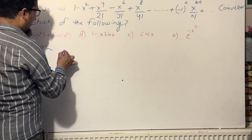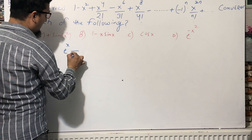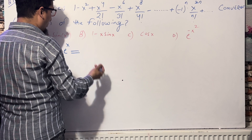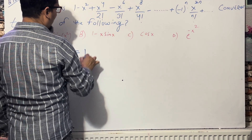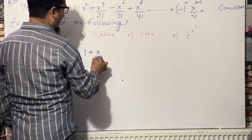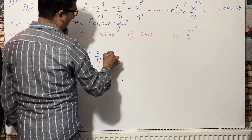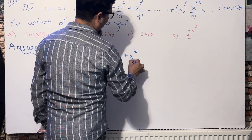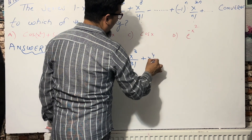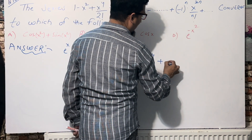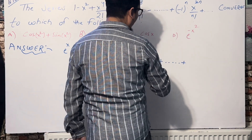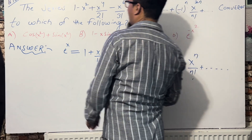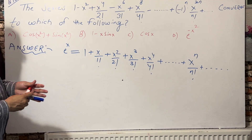There is an exponential function e to the power x. Its series expansion is: 1 plus x divided by 1 factorial, plus x squared divided by 2 factorial, plus x cubed divided by 3 factorial, plus x to the power 4 divided by 4 factorial, and so on. The general term is x to the power n divided by n factorial. This is the series expansion of e to the power x.